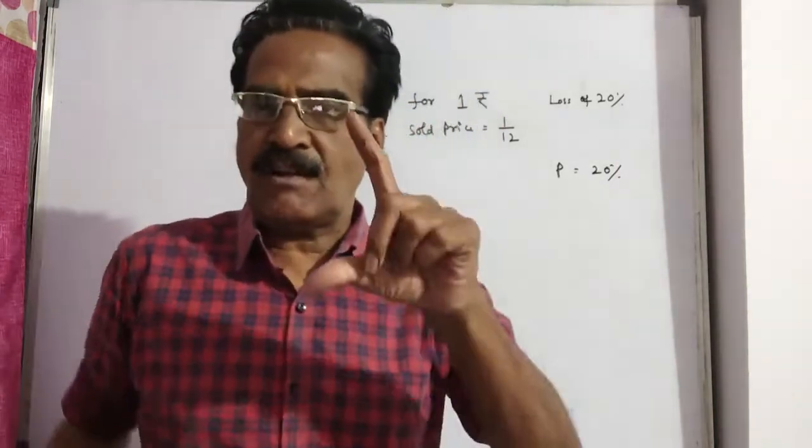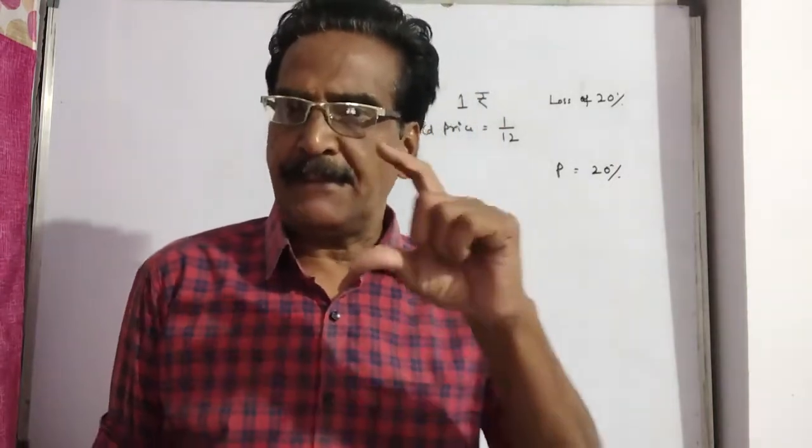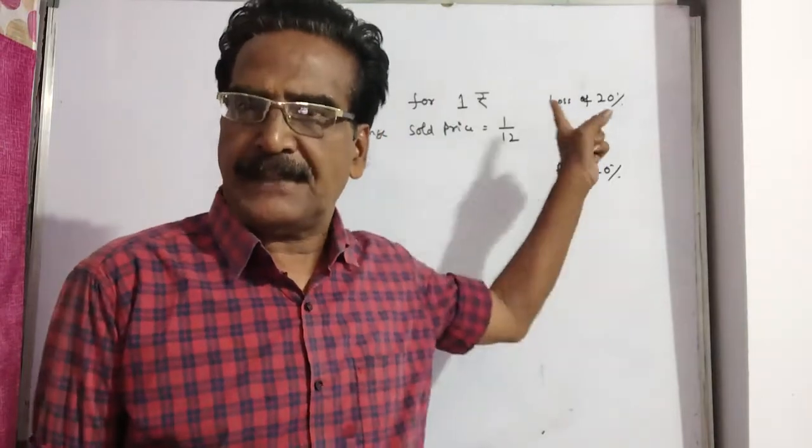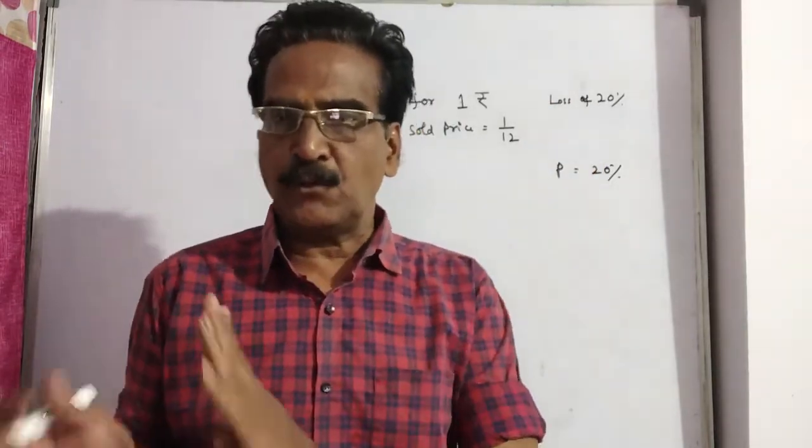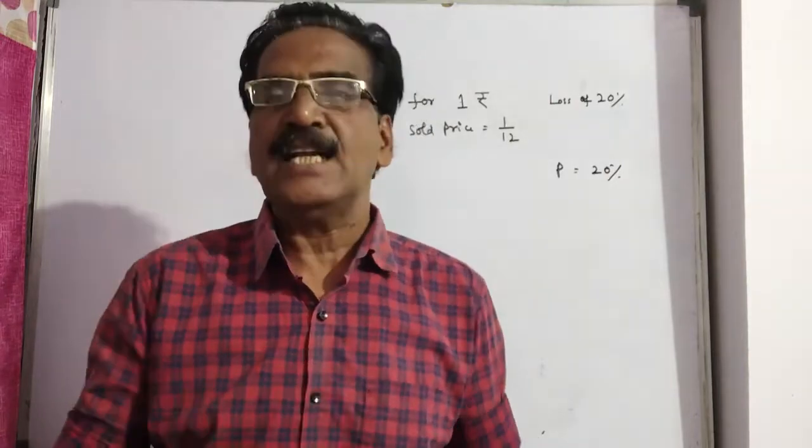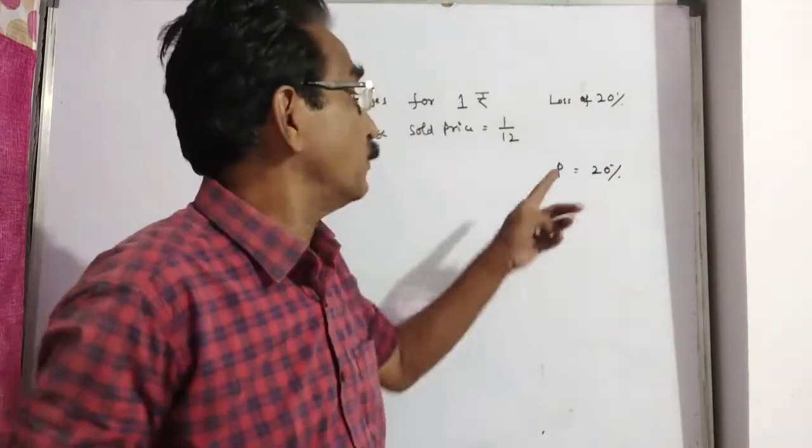By selling 12 oranges for a rupee, a man gets a loss of 20%. And here the question is, how many for a rupee should he sell to gain 20%?